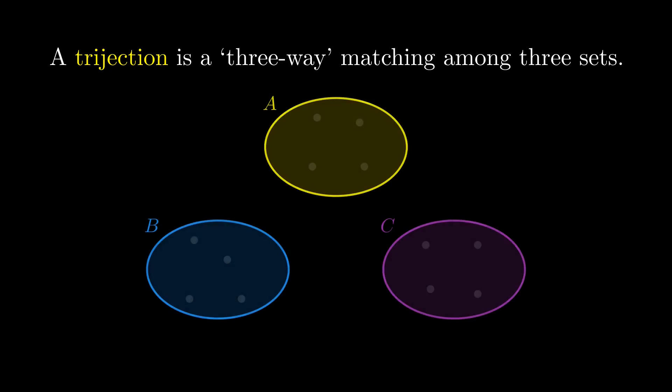A trijection, then, should be a sort of matching among three sets. Say we have sets A, B, and C, then a trijection should match an element of A to elements of B and C, which in turn match to each other.